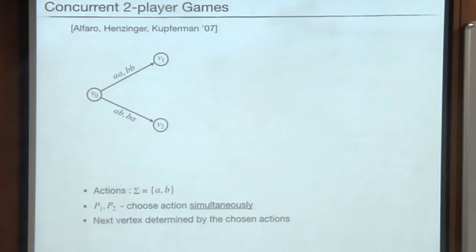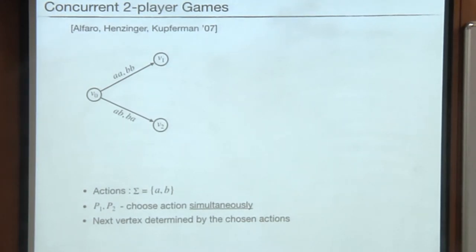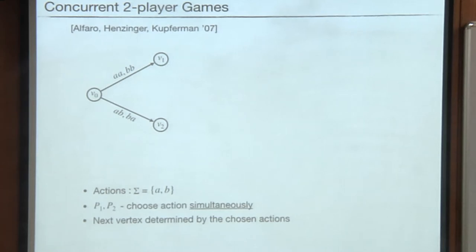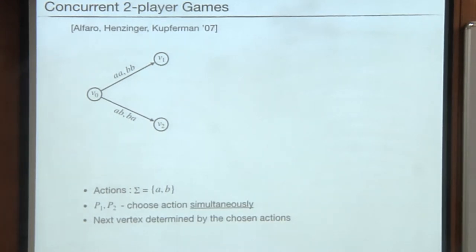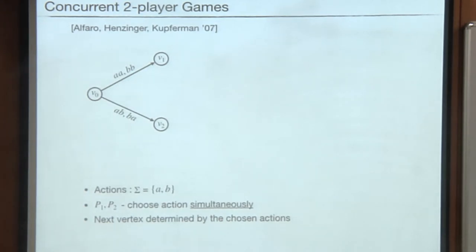Then people define something called concurrent two-player games. Here we have only one type of vertices — do not confuse these circles with the circles in the previous slide. We have two players and they choose actions from a set, say A, B. The transitions in the graph are labeled with two-letter words and players choose actions simultaneously.